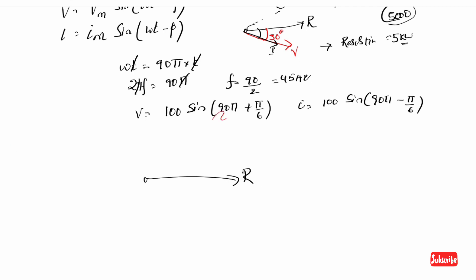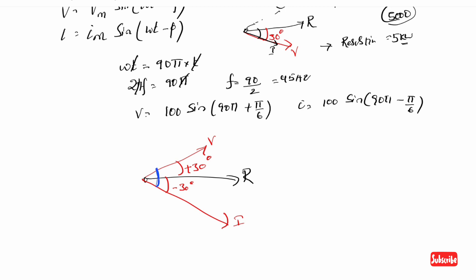We have voltage as the reference. This reference voltage is 30 degrees leading, that is plus 30 degrees. Current is running at minus 30 degrees. So the angle between voltage and current is 30 plus 30, giving φ equal to 60 degrees. The power factor cos(φ) is equal to cos(60°), which equals 1/2.